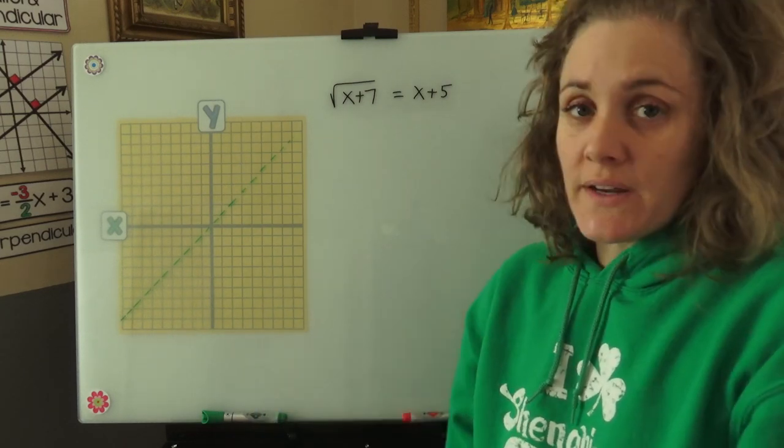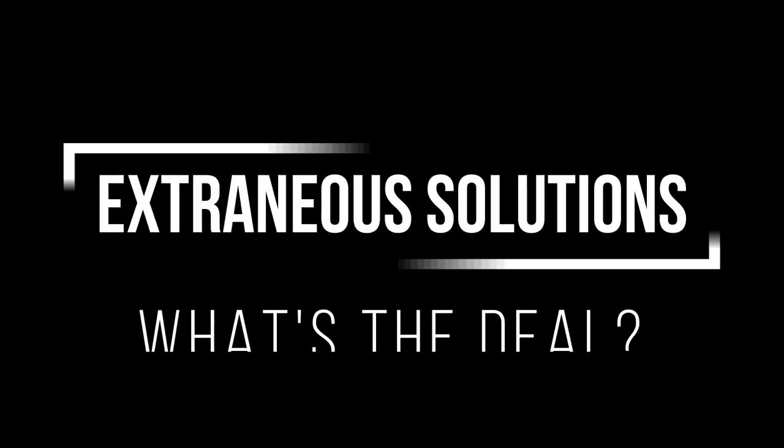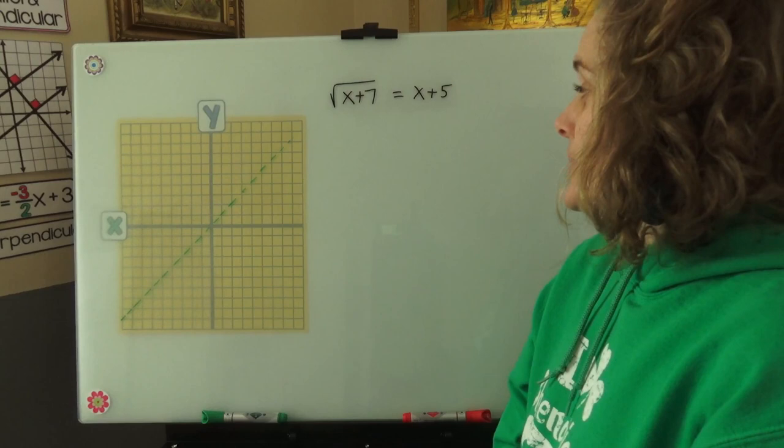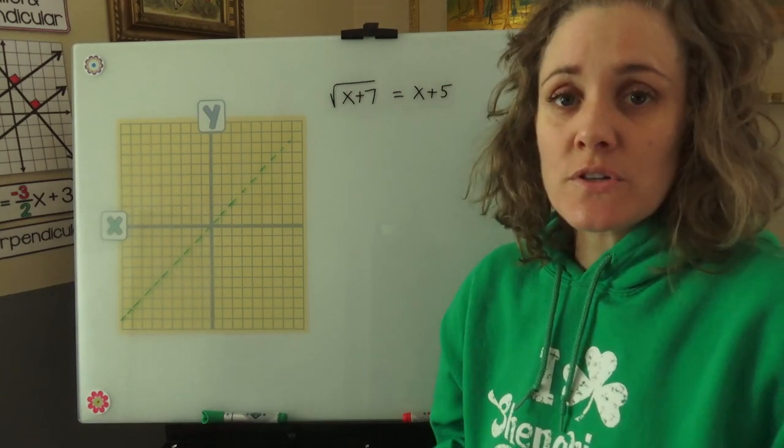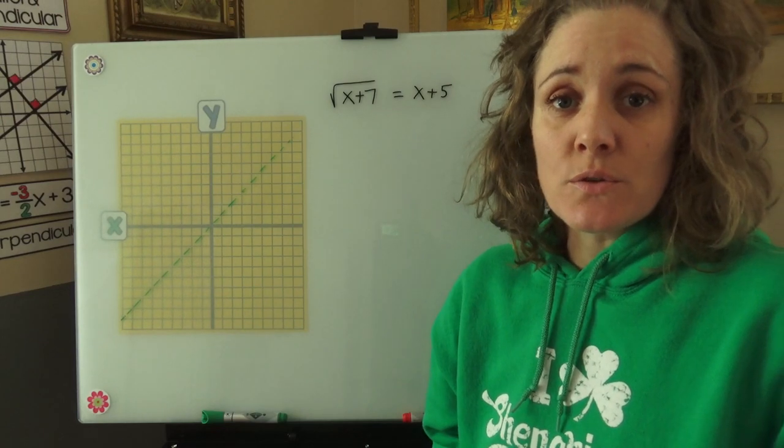Hi! Today we're going to talk about extraneous solutions and why they come up when we solve radical equations. Right here I have a radical equation, square root of x plus 7 equals x plus 5, and I'm just going to go through the steps first of solving and getting the two solutions.